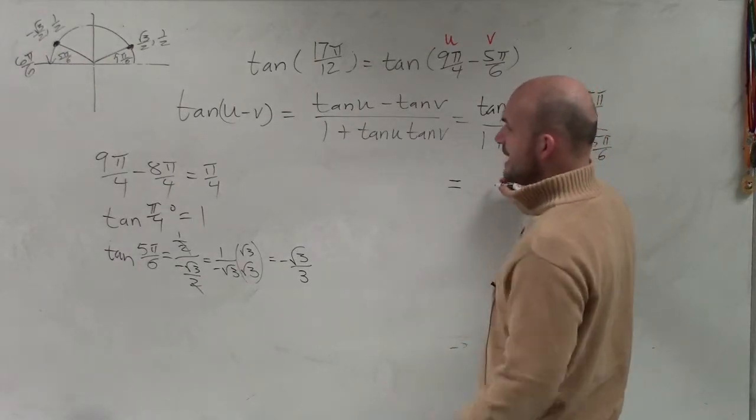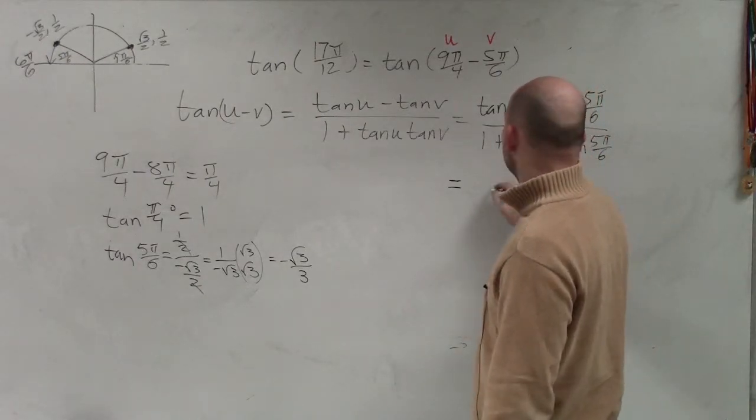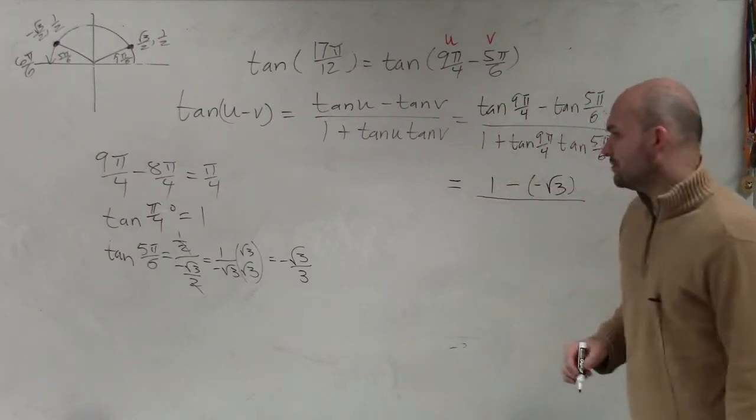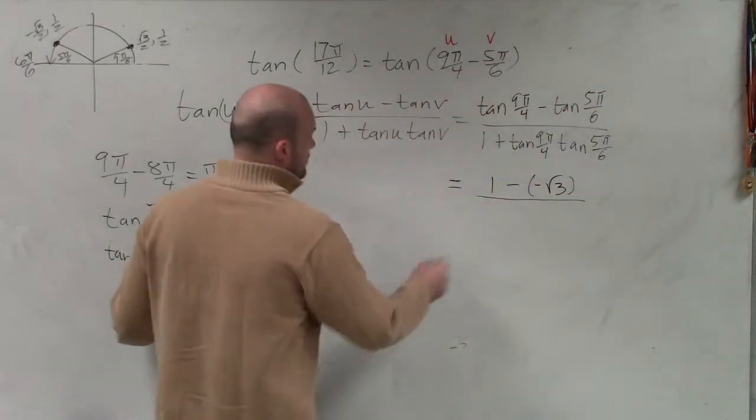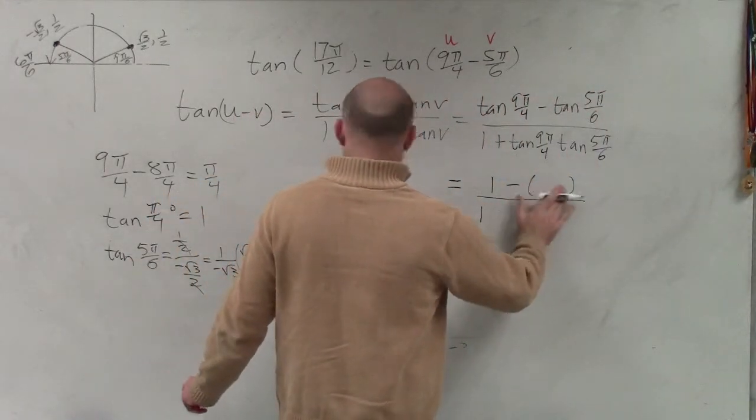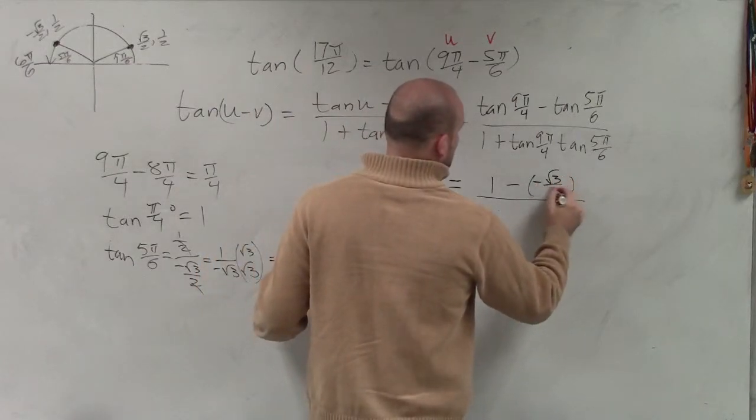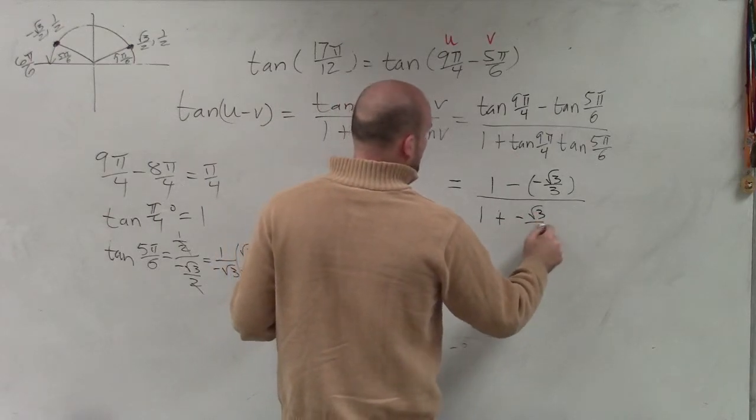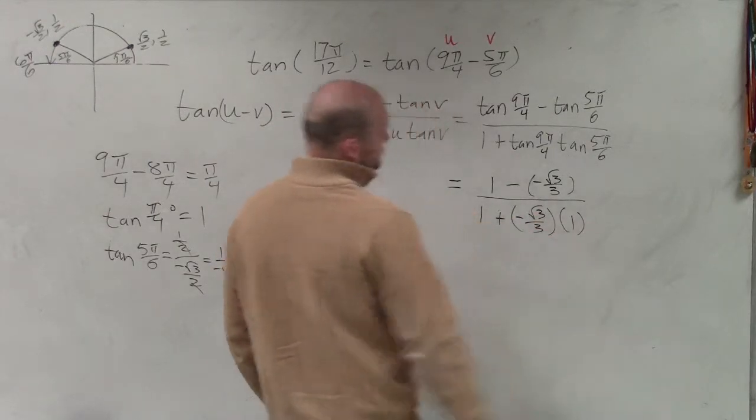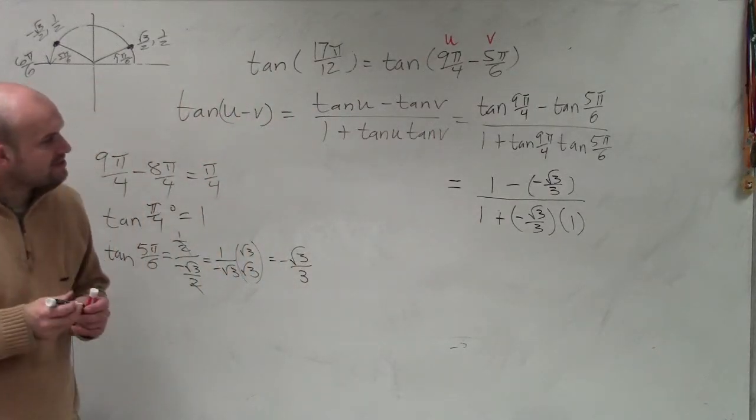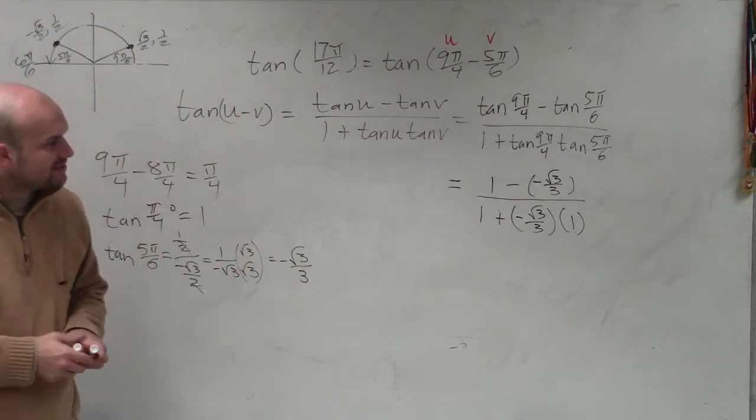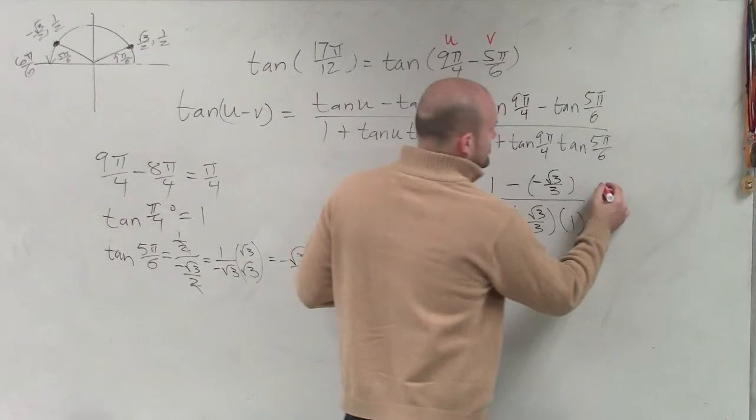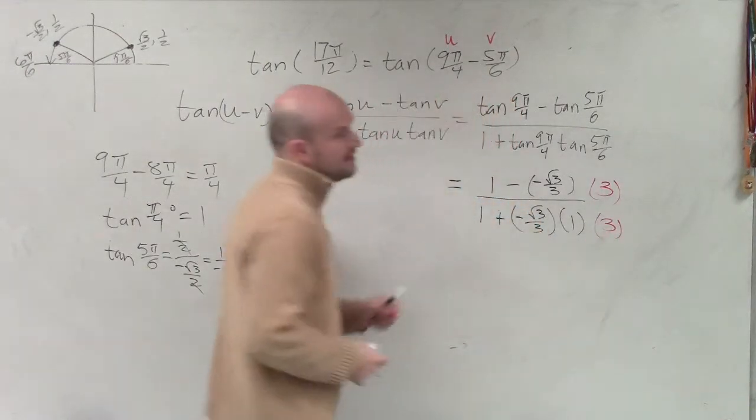So π/4, which is the same thing as 9π/4, same thing as π/4 is 1 minus -√3/3, divided by 1 plus -√3/3 times 1, right? So the next thing, guys, I would do is, again, get rid of your denominators. We don't like fractions, so get rid of them. So multiply by 3 on the top and on the bottom.